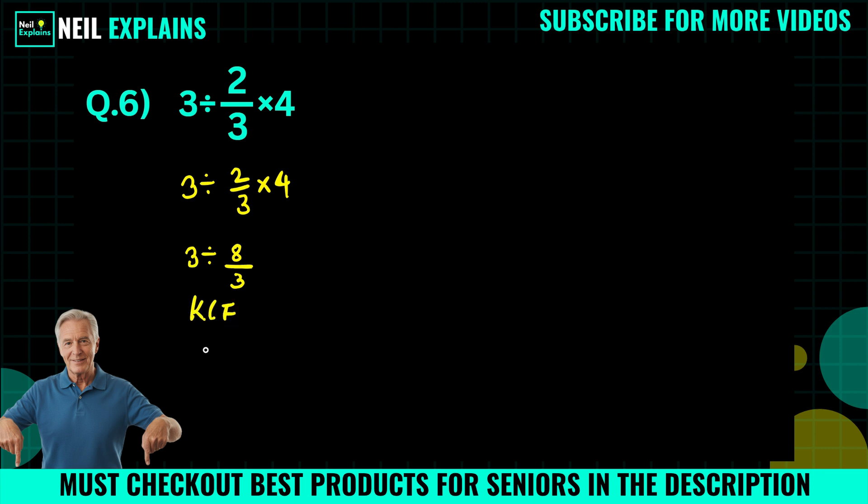So we will keep 3 as it is, and division is changed to multiplication, and 8/3 will be changed to 3/8. Or we can say 3 times 3/8 which equals to 9/8. This is the right answer. Do you think this is the right answer? No.